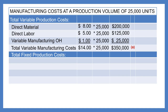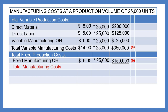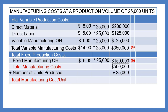The total fixed production costs include fixed manufacturing overhead: $6.00 per unit times 25,000 units equals $150,000. That is the answer to B. Adding the variable and fixed components together, total manufacturing cost is $500,000. To compute the cost per unit, we divide by 25,000 units, giving us a total manufacturing cost per unit of $20. That is the answer to question C.